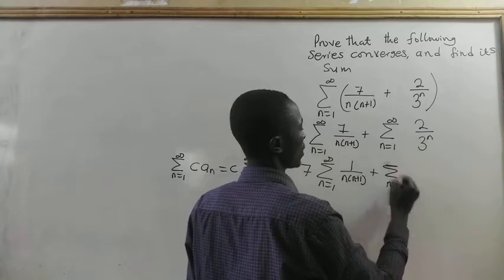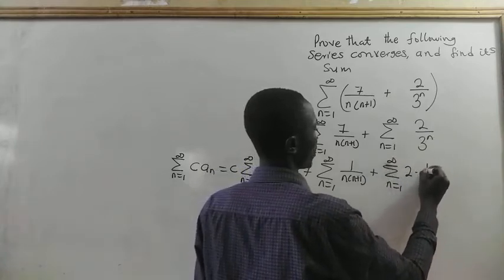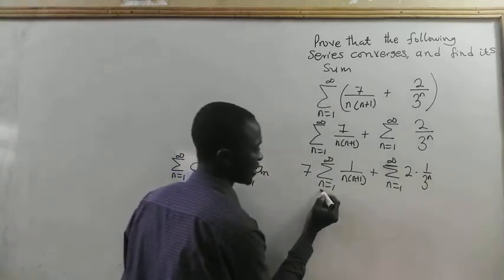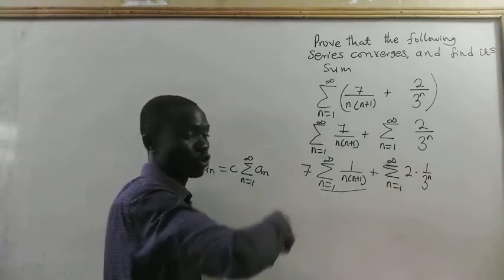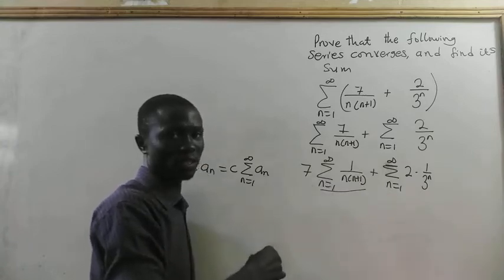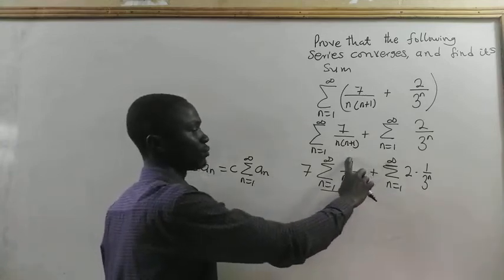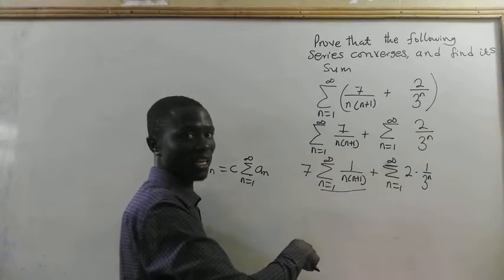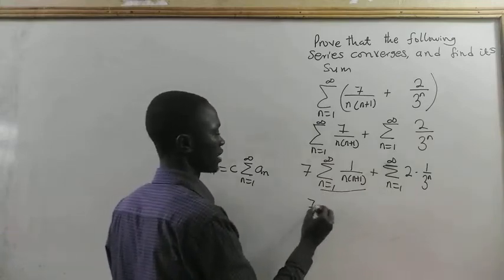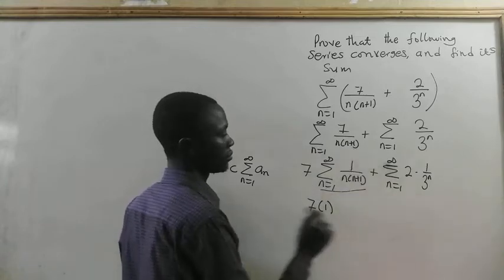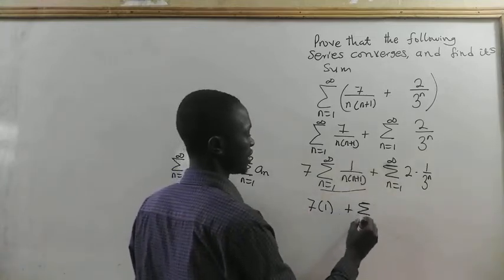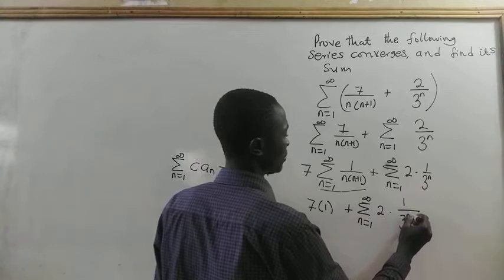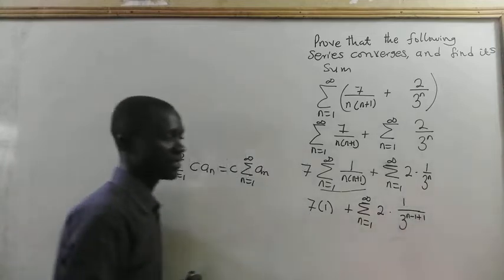We have the summation from n equal to 1 to infinity of 2 times (1 divided by 3) to the exponent n. Now, for the first summation, check the description — I have done that one separately in the description. The sum of that series is equal to 1. So we have 7 times 1, plus the summation from n equal to 1 to infinity of 2 times (1 divided by 3) to the exponent n minus 1, plus 1.